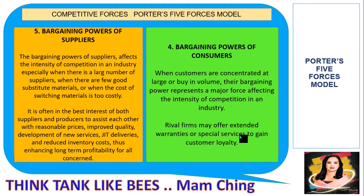The fifth force is the bargaining power of suppliers, which affects the intensity of competition especially when there is a large number of suppliers, when there are few good substitute materials, or when the cost of switching materials is too costly. It is often in the best interest of both suppliers and producers to assist each other with reasonable prices, improved quality, new service development, just-in-time deliveries, and reduced inventory costs, thus enhancing long-term profitability.